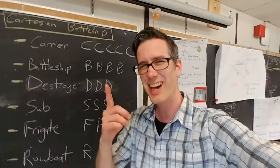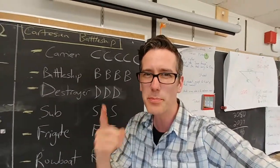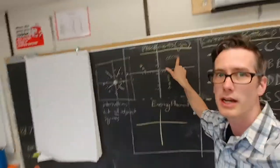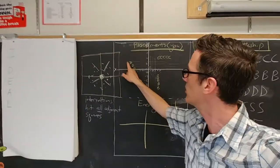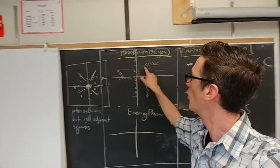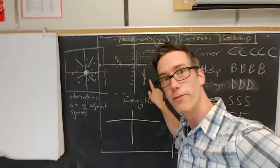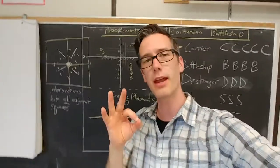Here's the catch. You're not allowed to curve your ships. There are no bent battleships in here, so you've got to keep them pretty much in a straight line. But you can go diagonal or horizontal or vertical. Those are all fair game. Go ahead and set up your grid.